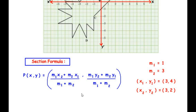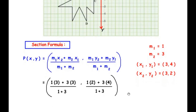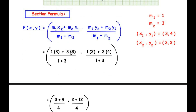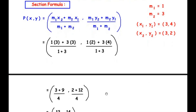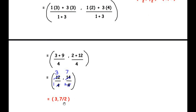Plugging in the values — x-coordinate: (1×3 + 3×3)/(1 + 3) = (3 + 9)/4 = 12/4 = 3. Y-coordinate: (1×2 + 3×4)/(1 + 3) = (2 + 12)/4 = 14/4 = 7/2. So the coordinates of point P, which divides line AB in the ratio 1:3, are (3, 7/2). Now let us move on to the last sub-question.